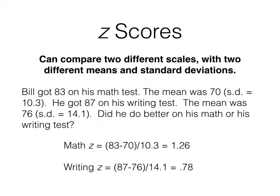He scored 1.26 standard deviations above the mean for his math test. But on his writing test, even though his raw score was higher, he scored only 0.78 or about three quarters of a standard deviation higher than the mean. So the raw scores didn't give us this kind of information comparing it to the mean. And as it's pointed out in your textbook, I can now easily find Bill's percentile rank for each test, and that would tell me what percent of students scored above or below him on each test.